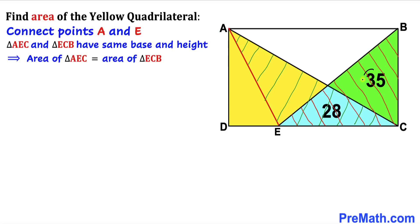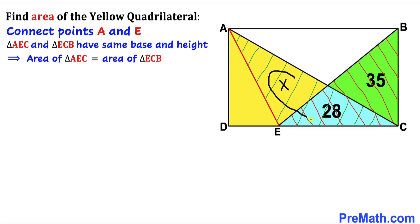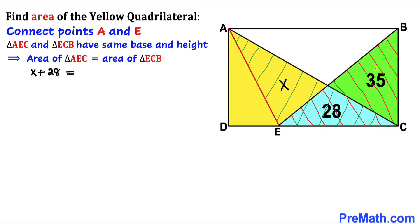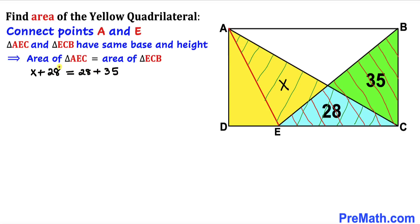The area of the green triangle is given as 35 and the blue triangle as 28. We don't know the area of the remaining part, so let's call it X. The combined area of triangle AEC is X + 28. The combined area of triangle ECB is 28 + 35. Since these are equal, the 28s cancel on both sides, giving us X = 35.